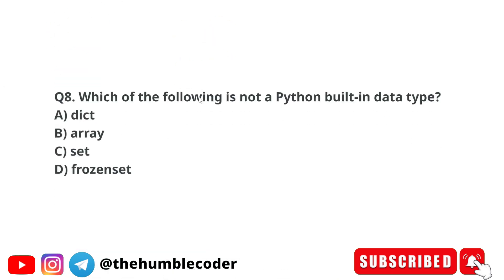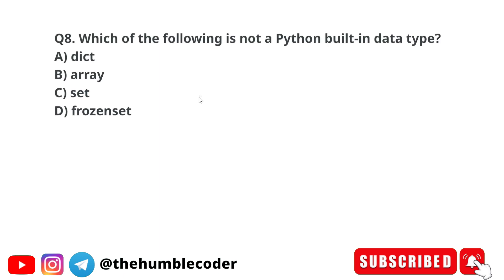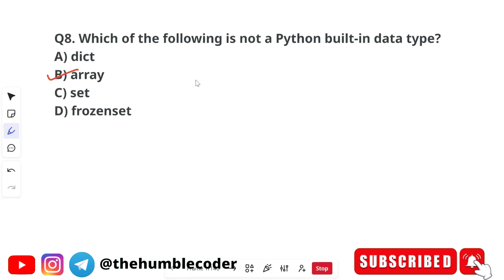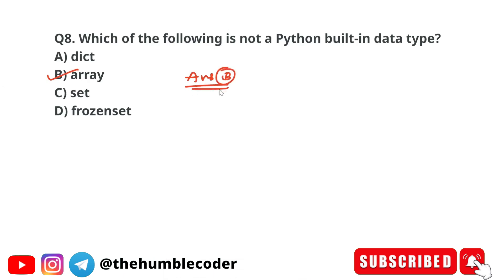Next question: which of the following is not a Python built-in data type? Options are dict, array, set, and frozenset. The correct answer is option B, which is array. While dict, set, and frozenset are built-in data types, array is not — but it can be used with an imported module.